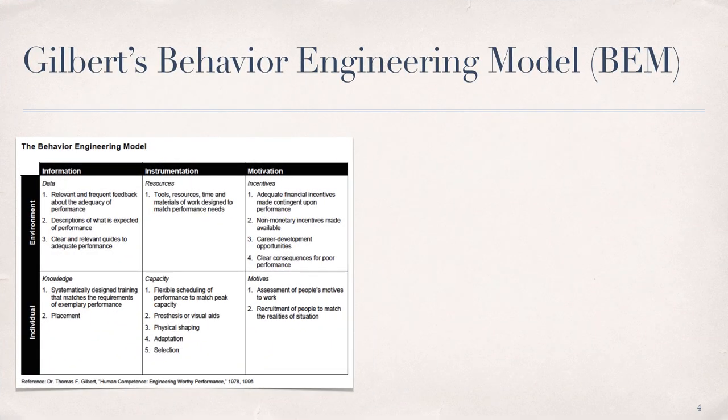We cannot have a conversation about cause analysis in HPT without talking about Gilbert's Behavior Engineering Model, or BEM. This should have become evident as you completed the reading assignments for this week, along with the supplemental articles provided. Thomas Gilbert is rightly referred to as the father of human performance, and his book, Human Competence, Engineering Worthy Performance, should be in the library of every HPT practitioner.